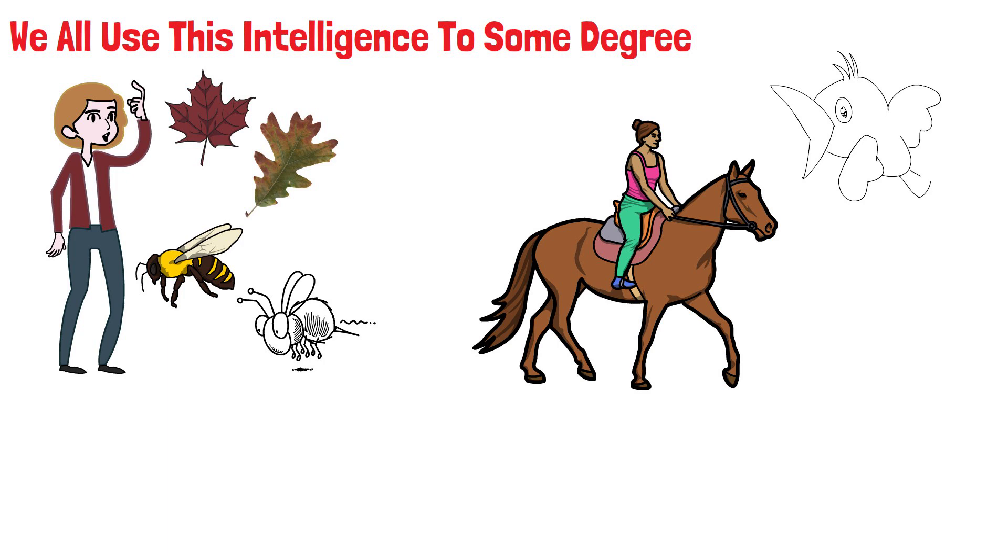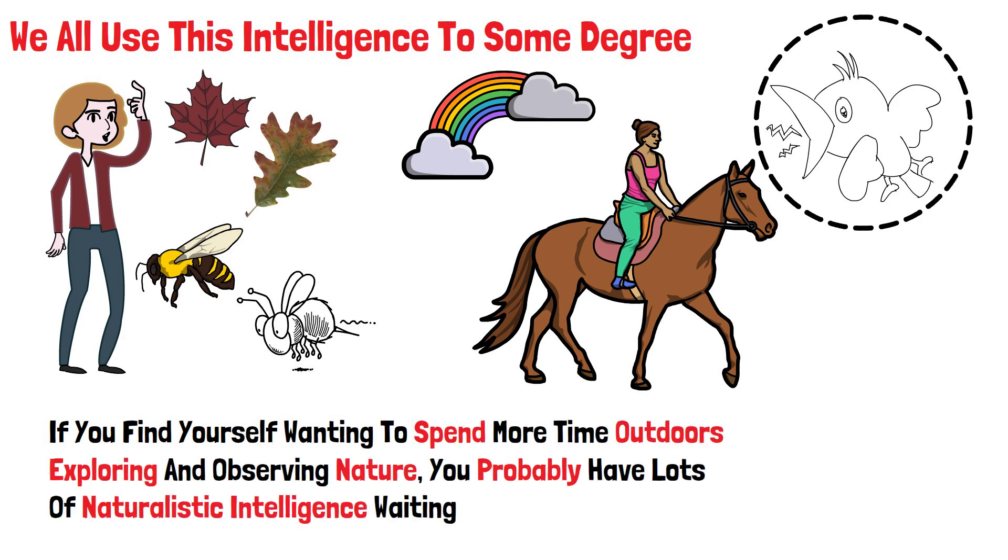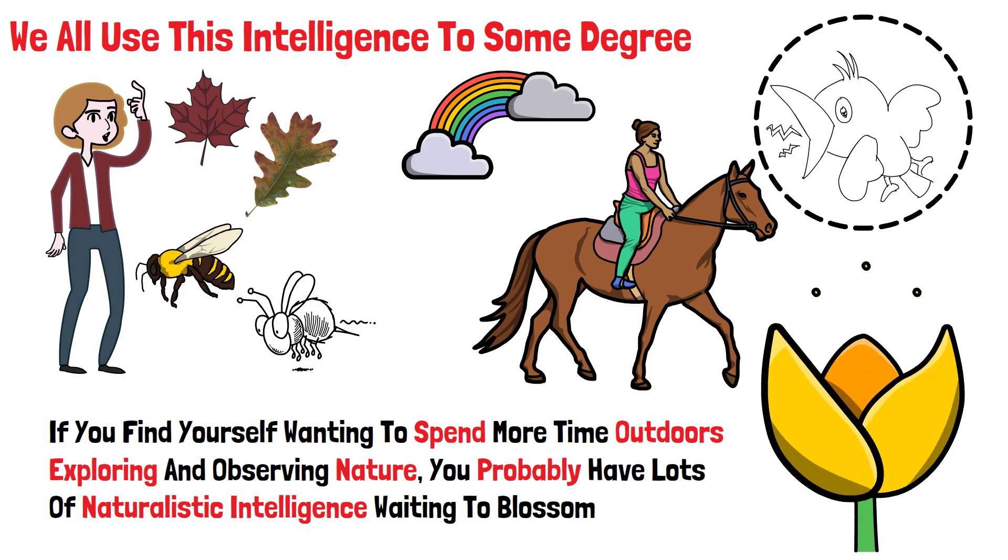They can glance at a bird or insect and instantly know what it is. They have a sixth sense for changes in the weather and shifts in ecological patterns. If you find yourself wanting to spend more time outdoors exploring and observing nature, you probably have lots of naturalistic intelligence waiting to blossom.